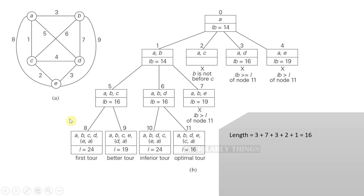So when we compare all these lengths, we can clearly see that at node 11, we have found an optimal solution. That means if we follow this path A, B, D, E, C, A, we will have the shortest length of 16 and we will have visited all the vertices exactly once.